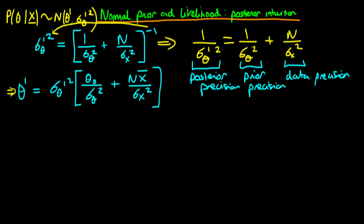What do we notice about this result? Well, if we decrease sigma theta squared, that's equivalent to saying we're more sure about our prior. In that case, the precision is going to increase — if sigma theta squared declines, then the precision increases. That makes sense because we're more sure about our prior estimates. Secondly, as n increases — in other words, as our sample size increases — that also leads to an increase in precision, because with a larger sample we would intuitively expect to be more precise about our posterior estimates.